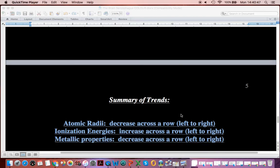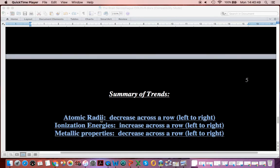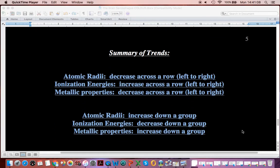So let's look at a summary of our trends. We know that atomic radii and ionization energy are going to do the opposite of each other, the reverse. So if atomic radii gets smaller across a period, ionization energy gets bigger. We should also know from previous years, metallic properties decrease across a period. Then we go down a group. So atomic radii increases down a group. Therefore, ionization energy decreases down a group. And metallic properties increase down a group.